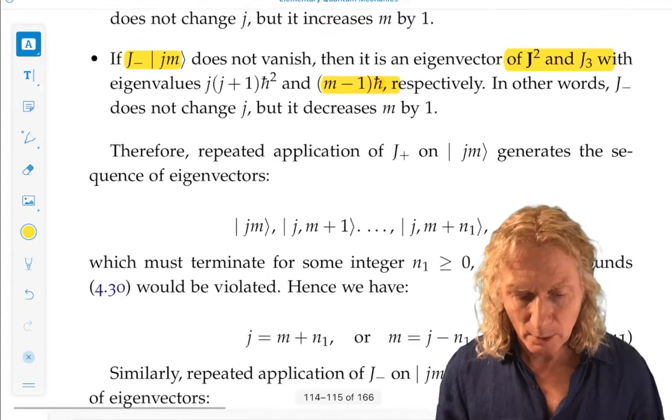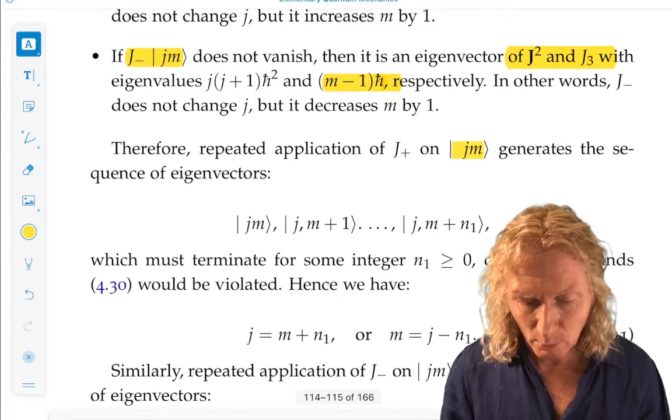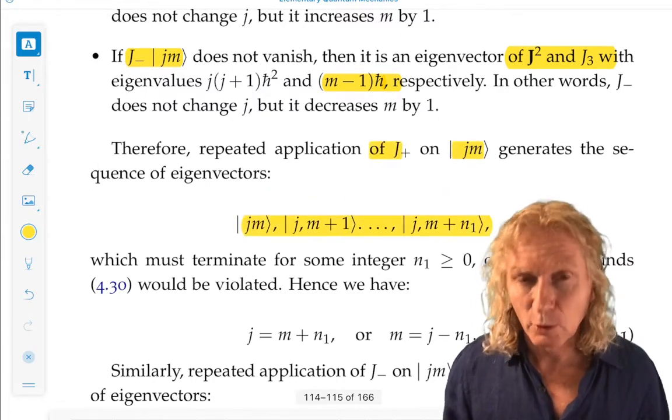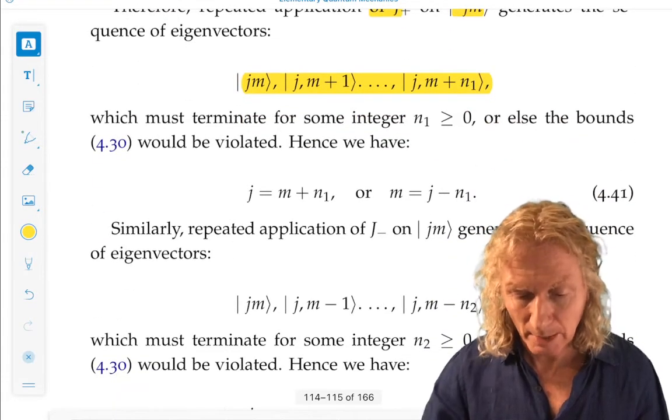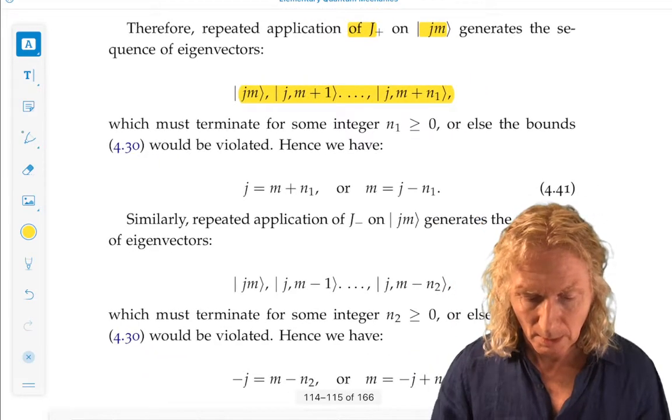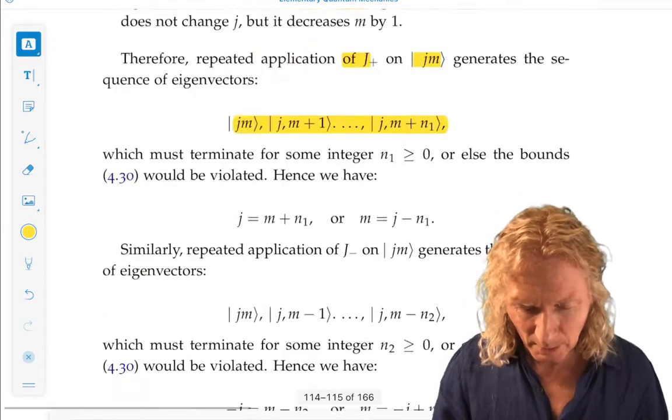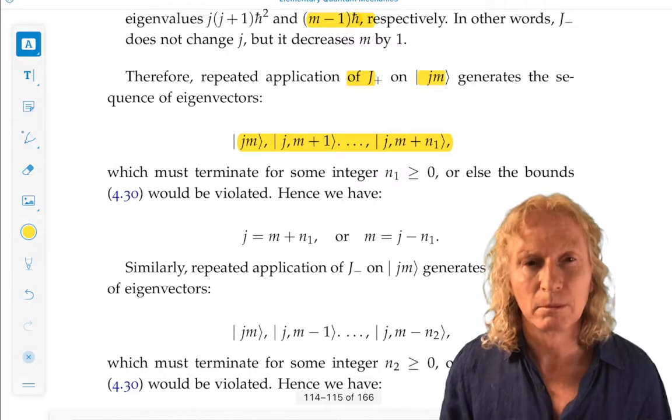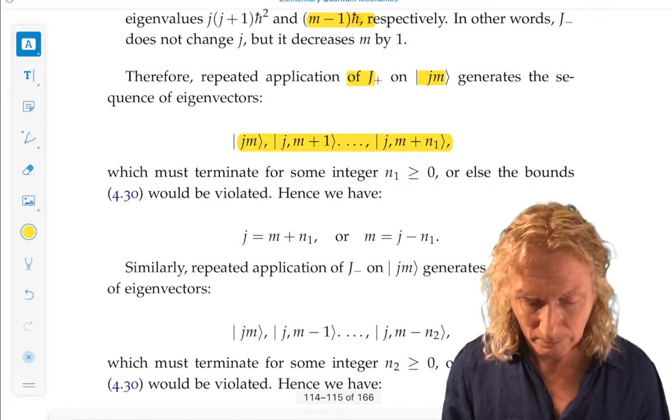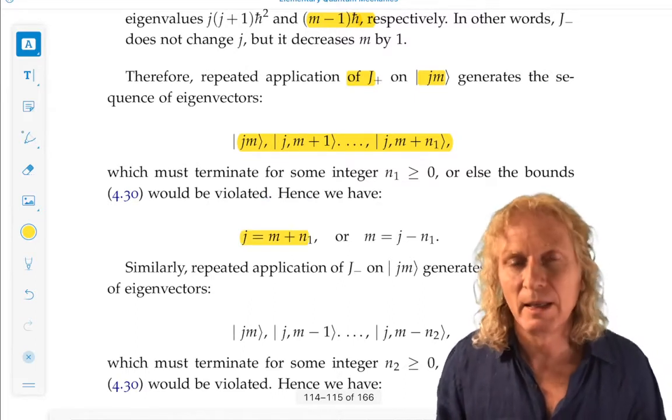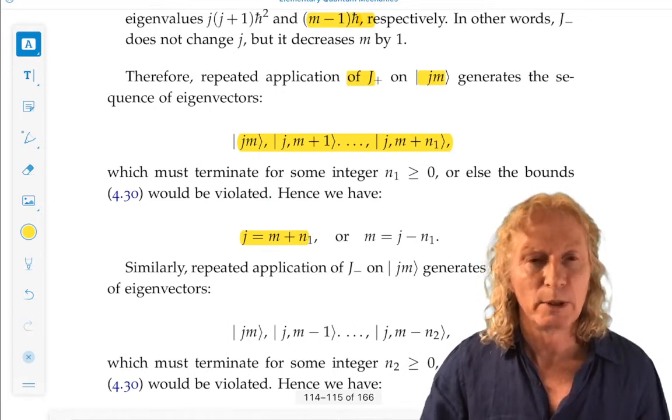Now, if we repeatedly act on ket J, M with J plus, we're going to get a sequence of eigenvectors, and it's going to have to terminate. Otherwise, we'd violate the bounds. And so, we have two choices. It terminates at M plus N1 equals J, or M equals J minus N1. It has to do that, because that's the end of the bounds for M between minus J and J.